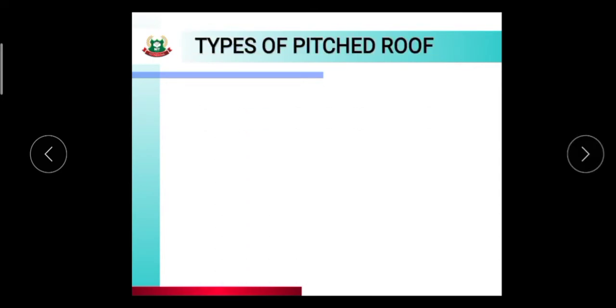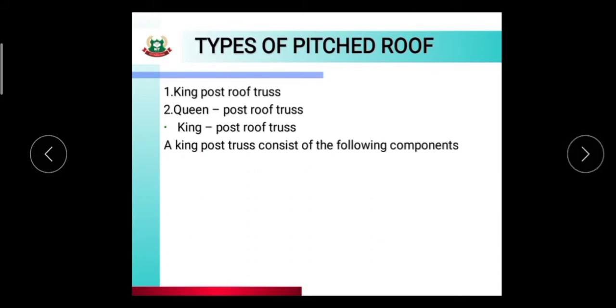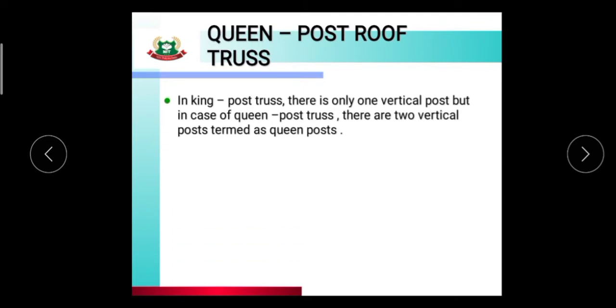Types of pitch roof: king post roof trusses and queen post roof trusses. A king post truss consists of the following components: lower tie beams, two inclined principal roof trusses, and there is only one vertical post, but in case of the queen post trusses, there are two vertical posts.